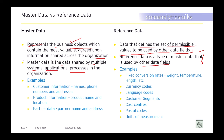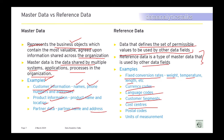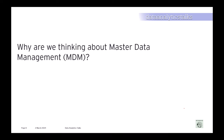To make this concrete with examples: master data includes customer information (name, phone numbers, address), product information (product name, location), and partner data (partner name, address). Reference data examples include fixed conversion rates, weight, temperature, length, currency codes, language codes, customer segments, cost centers, postal codes, and units of measurement. These examples show the visible difference between master data and reference data.